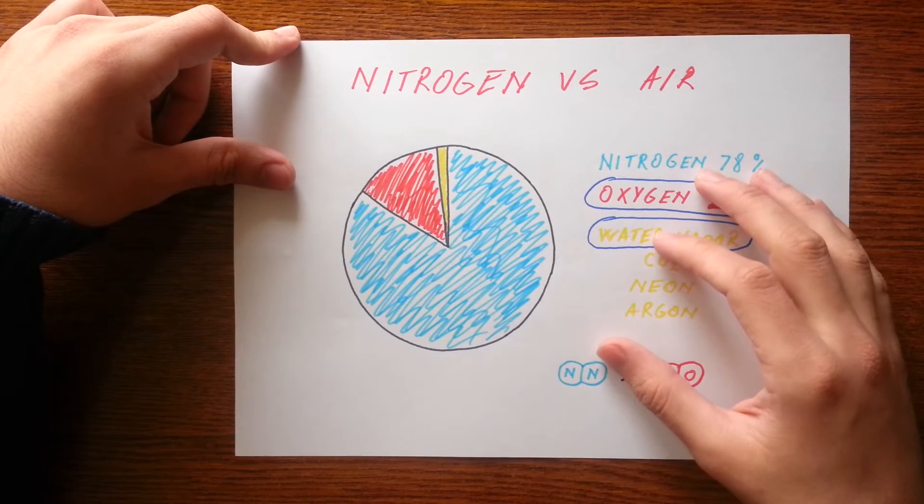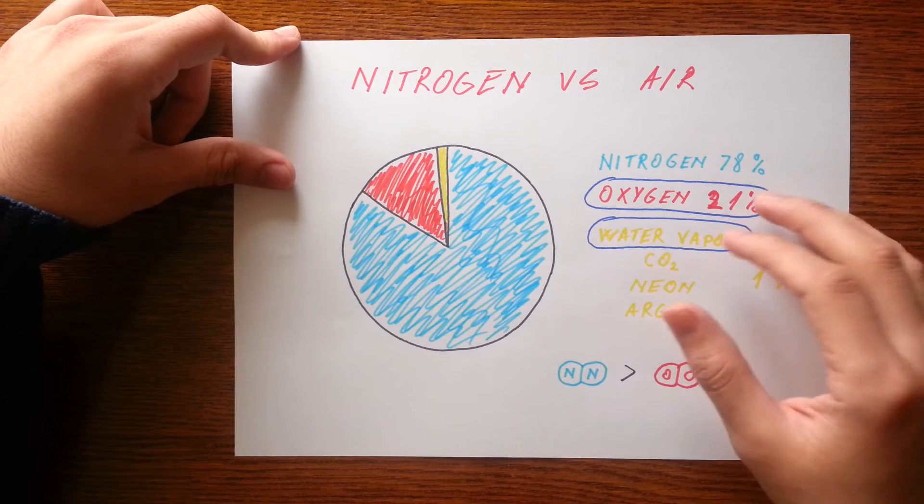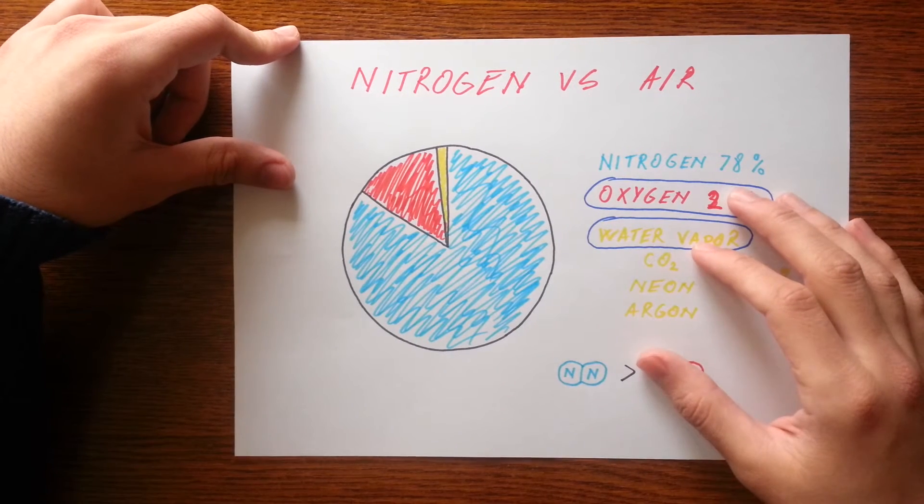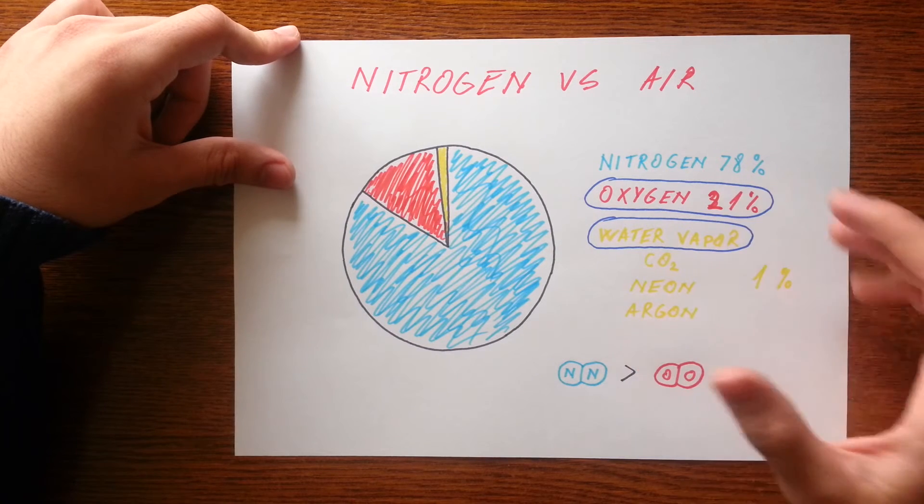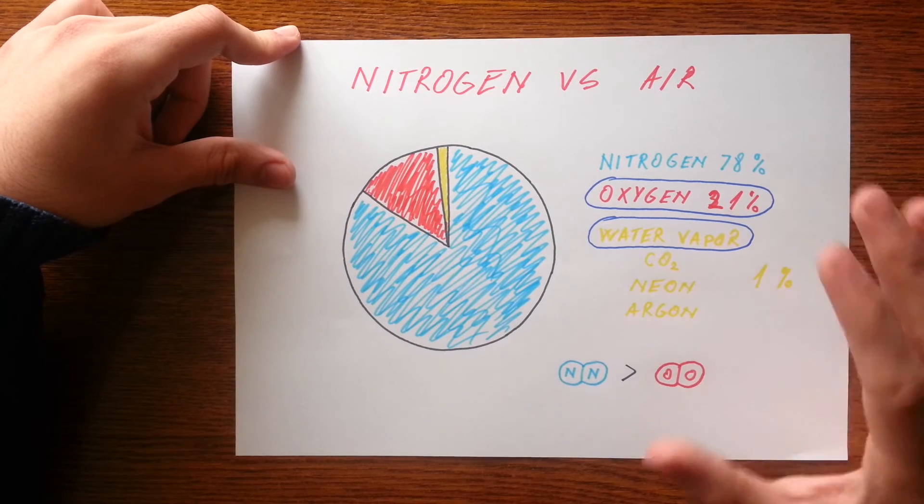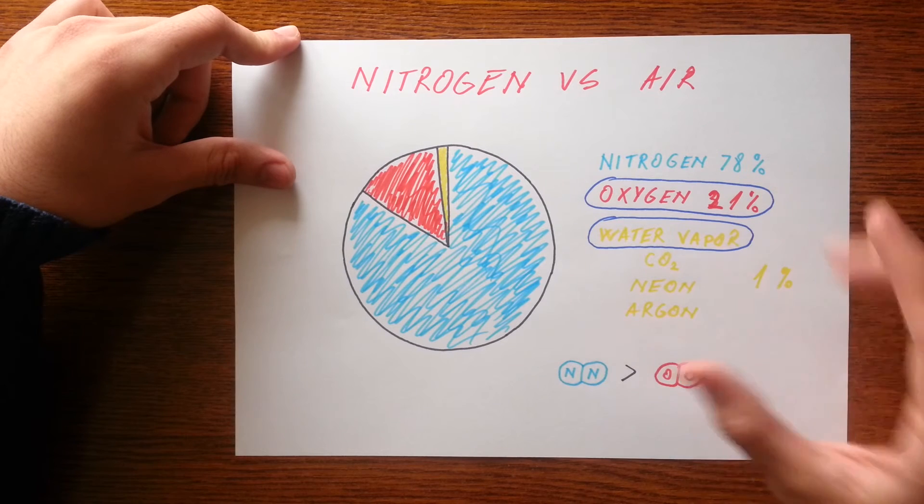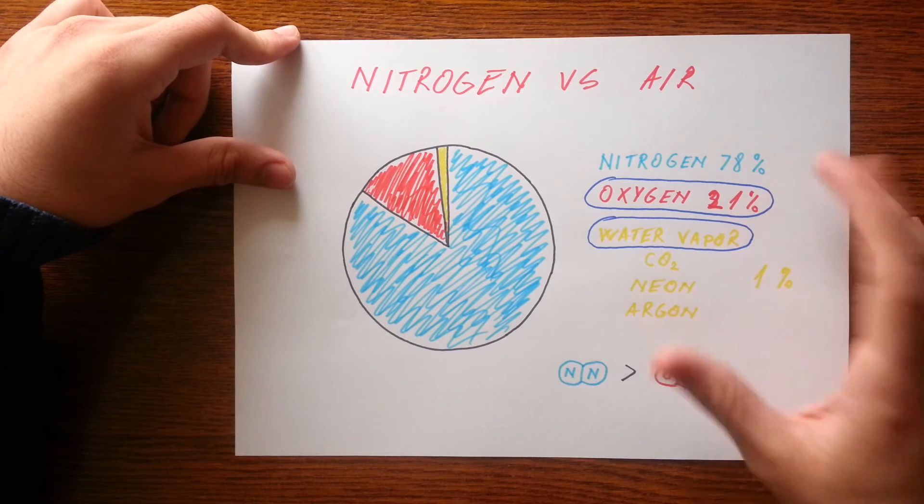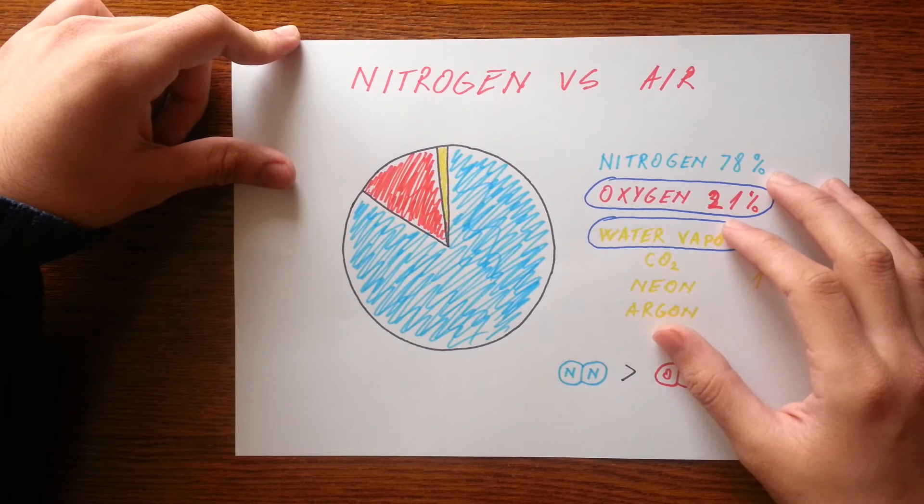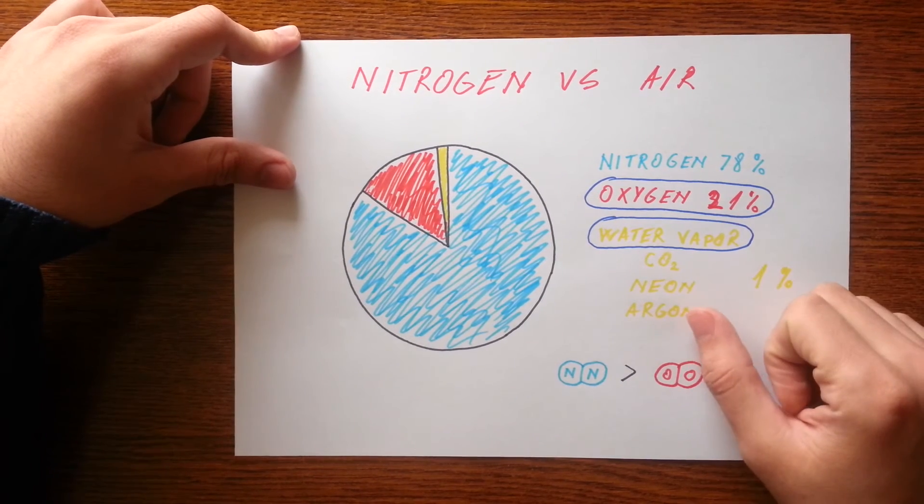So this would be another advantage for nitrogen: the lack of water vapors. So in conclusion, with nitrogen, your tire pressure will remain more constant, saving a small amount in fuel and tire maintenance costs. There will be less moisture inside your tire, meaning less corrosion on your wheels.